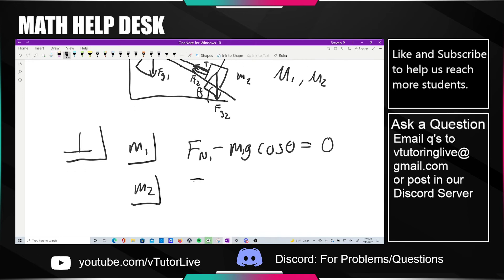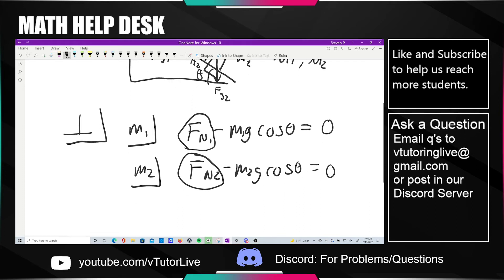But similarly for M2, it should be nice and simple. Fn2 minus M2g cosθ is equal to 0. And it's very nice for us, because just with these two equations, they're not very complicated, and they're going to let us solve for Fn1 and Fn2, which is a great piece of information to know when we want to calculate friction in a minute, right?